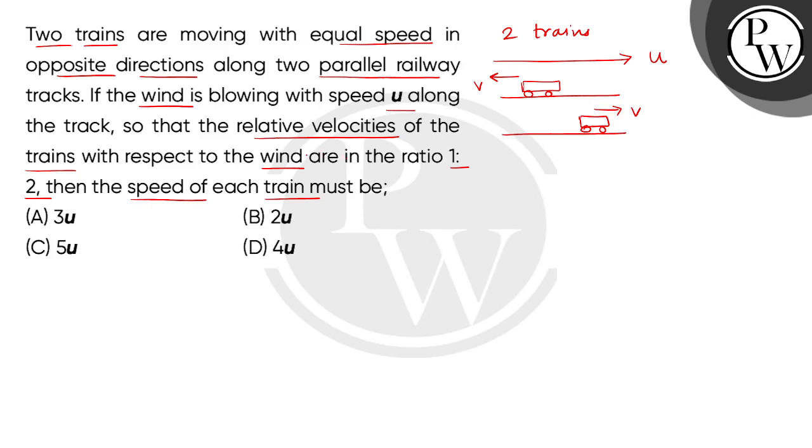Now, children, we're given that the relative velocities of the trains with respect to the wind are in the ratio 1 is to 2. This is the condition: V1 is to V2 is equal to 1 is to 2.